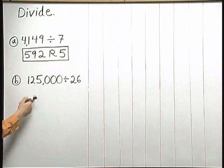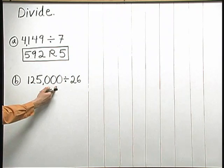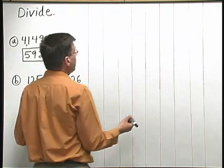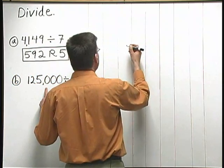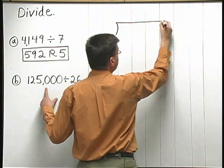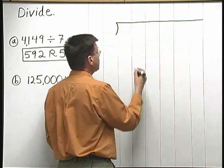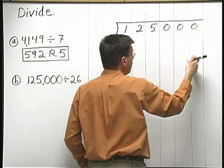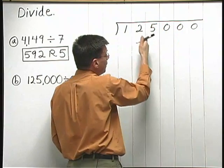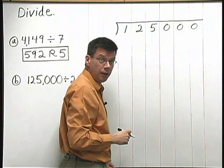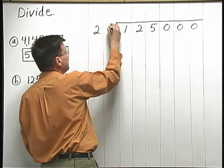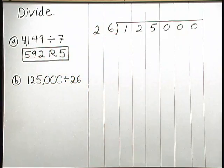Let's go ahead and do our second problem now: 125,000 divided by 26. To set up this long division problem, I write 125,000 inside the long division box — 1, 2, 5, 0, 0, 0 — with each digit in a separate column. Out in front, I write the number 26. And now we're ready to start repeating our four-step process: divide into, multiply, subtract, and bring down.